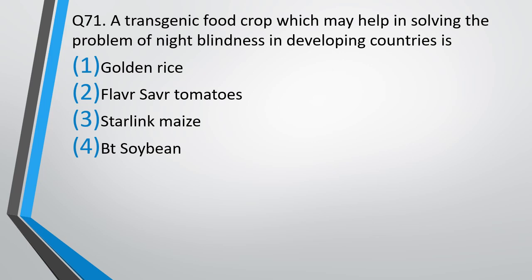Question No. 71. The transgenic crop which may be helpful in solving the problem of night blindness in developing countries is: golden rice, Flavr Savr tomatoes, Starling Maize, or BT soybean. This is a tricky question — you need to know that deficiency of vitamin A causes night blindness, and then identify which option contains vitamin A. The answer is option A, golden rice, because golden rice is the improved transgenic variety of rice that contains vitamin A.